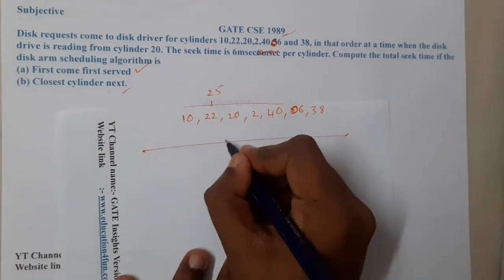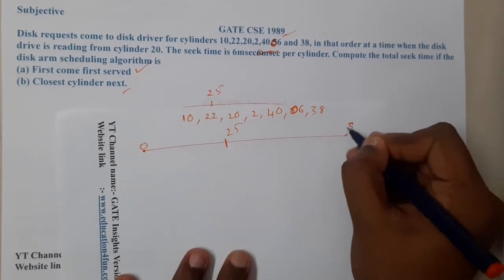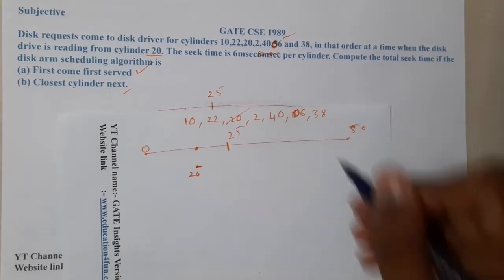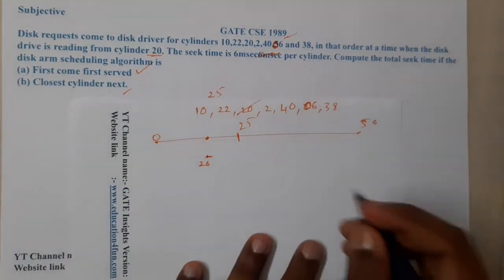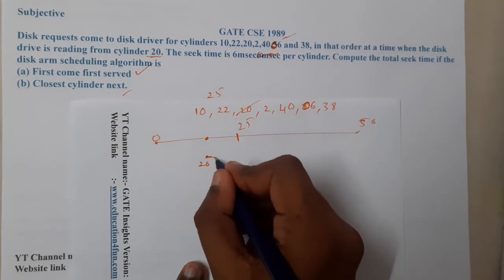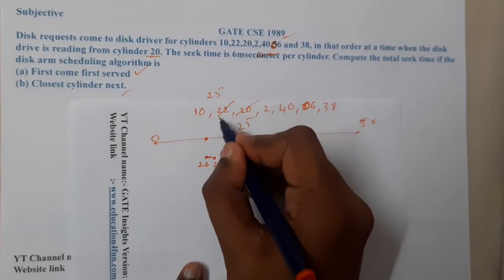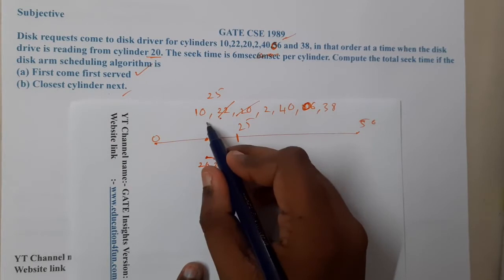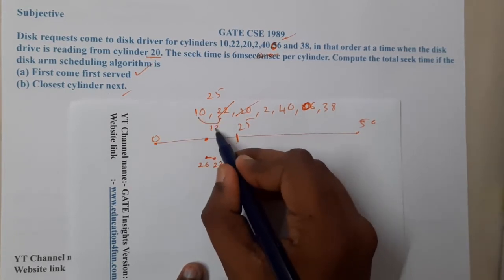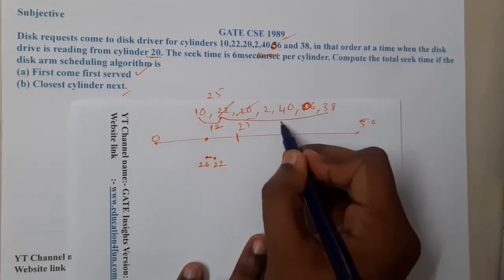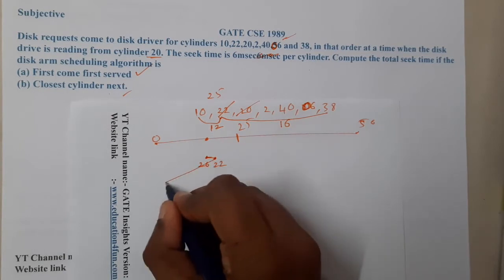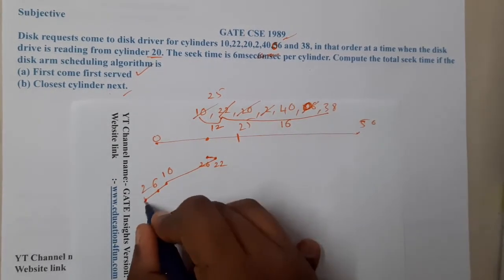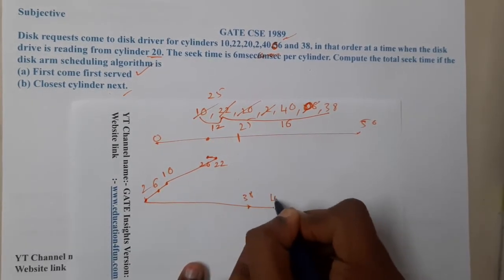We are initially starting at cylinder 20. We also have 20 in our list, so we execute that directly. From 20, which cylinder is nearest? 22 is nearest, so we go to 22. From 22, the distance to 10 is 12, whereas the distance to 38 is 16, so we go to 10. From 10 we go to 6, from 6 we go to 2, from 2 we go to 38, and from 38 we go to 40.